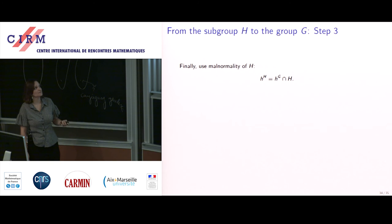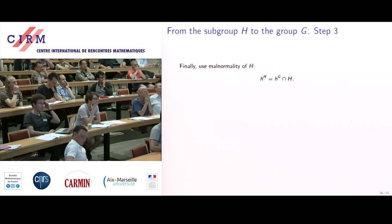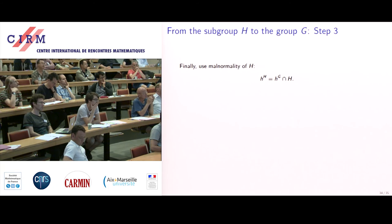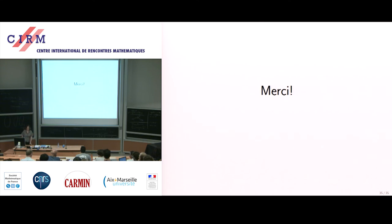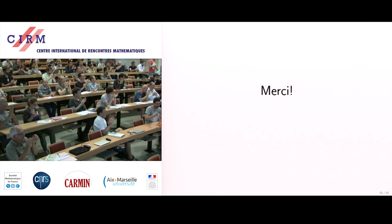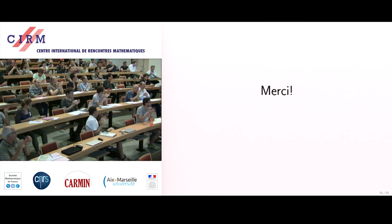Because of malnormality, conjugacy in G reduces to conjugacy in H. So R — the language of conjugacy representatives in the hyperbolic subgroup H — built via the fellow-traveling pairing — inherits the complexity from the large group's language, completing the proof.